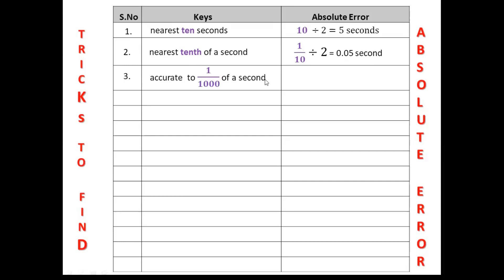Third: if the key is accurate to 1 over 1000, or one-thousandth of a second, the absolute error will be 1 over 1000 divided by 2 — half of 1/1000 — which is 0.0005 seconds.